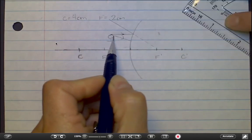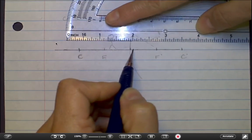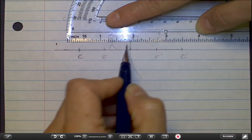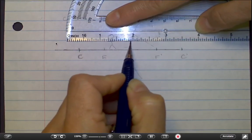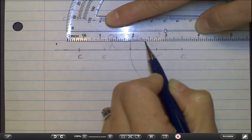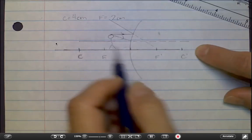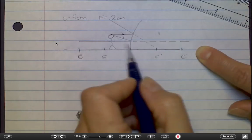Second incident ray hits the mirror here and reflects parallel to the principal axis, like so. On the back of the mirror, that ray will continue on as a virtual ray behind the mirror.